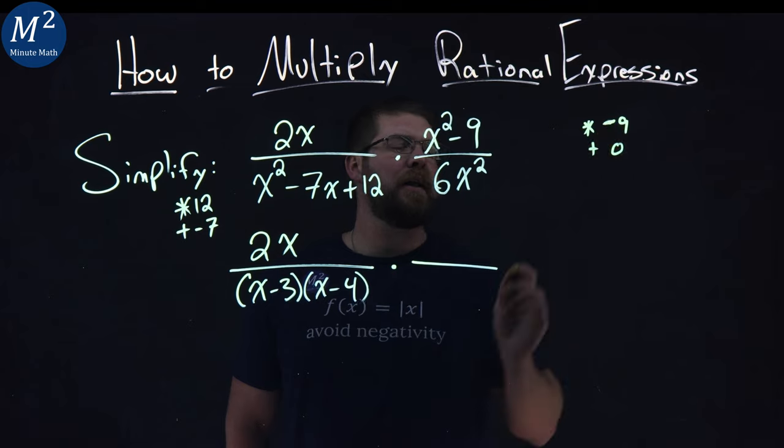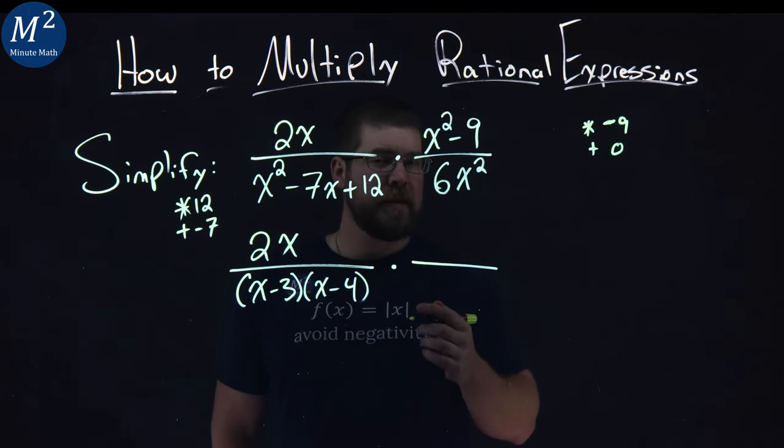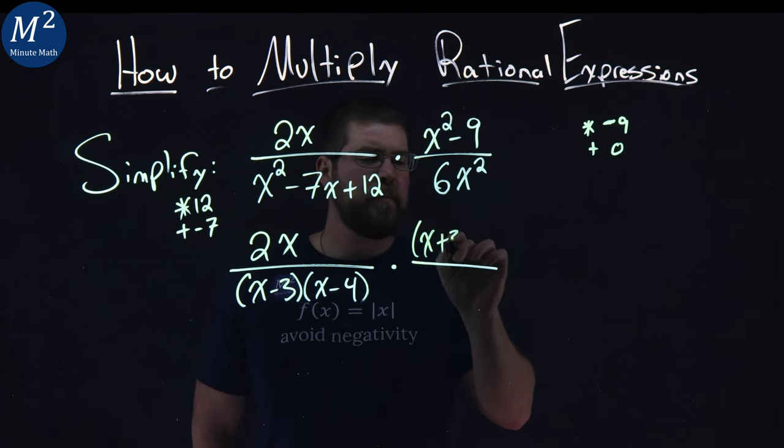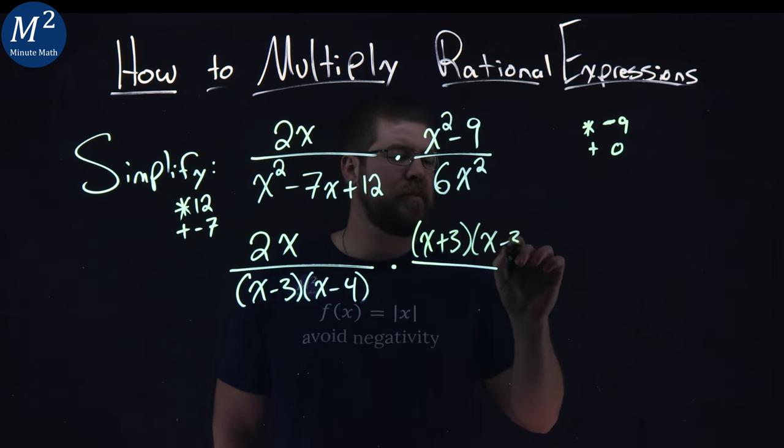So what two numbers multiply to be a negative 9 and add to be 0? And that's a positive 3 and a negative 3. x plus 3 and an x minus a 3.